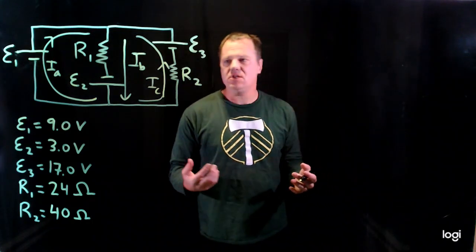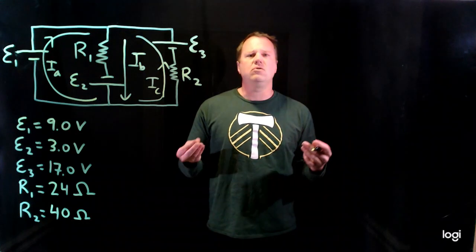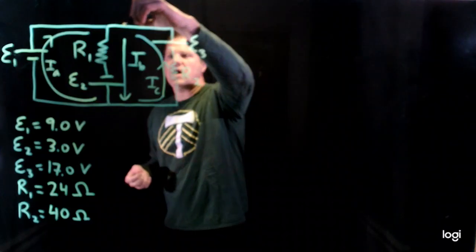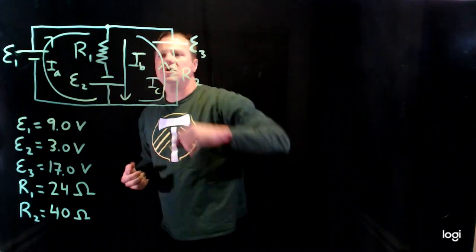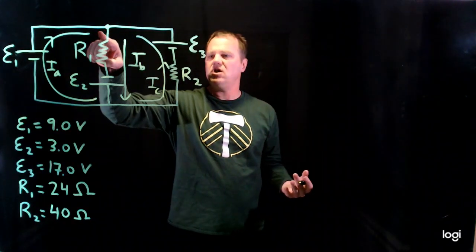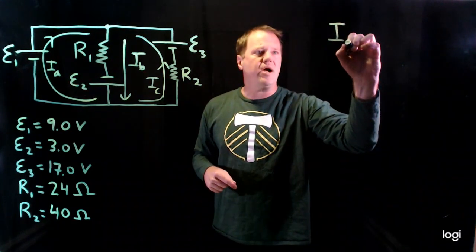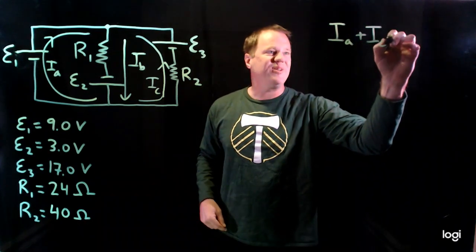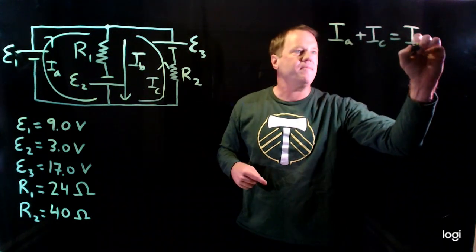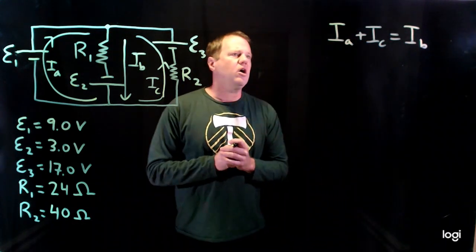I've assigned names and directions to each of these currents. I'm going to first apply Kirchhoff's current law to a junction. I can pick this junction here or this junction — it doesn't really matter which. The summation of the currents going in has to match the summation going out. At this junction, currents A and C are going in, so they go on the left-hand side, and current B is going out, on the right-hand side. Doing the other junction gives the same equation, so we're done with Kirchhoff's current law.